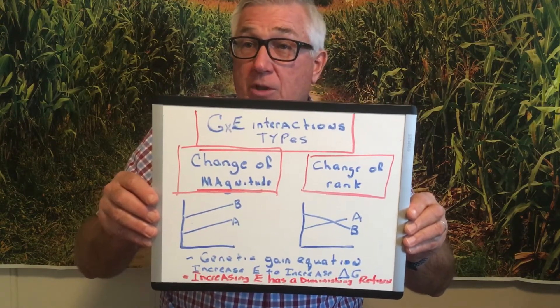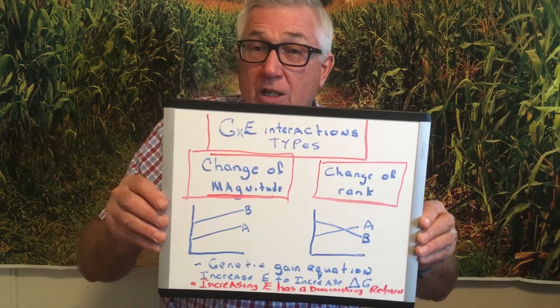Remember that without G by E, most of you wouldn't have a job. And remember that the genetic gain equation might suggest that just increasing environments alone would increase genetic gain — but that's not necessarily true, because it depends on what those environments are and what happens between products in those environments. Furthermore, if you have a 40, 60, or 100 entry test, you have multiple hybrids interacting with multiple environments and multiple other products. Next week in part two, we'll get into how I've managed it, how others have managed it, and how you can manipulate genotype by environment interaction to your favor in your product development program. This is David Benson with Cornhusker Hybrids — where success starts with the seed. Stay passionate.